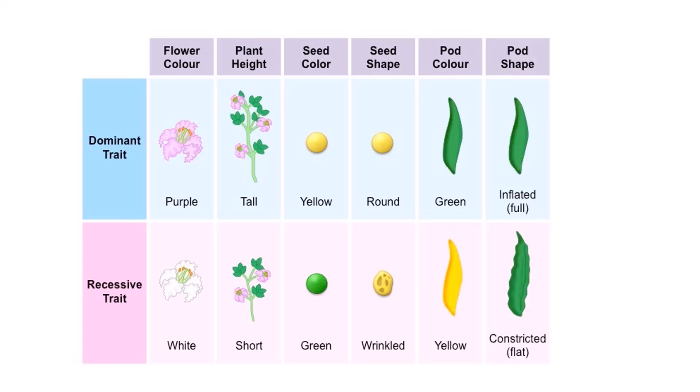The next trait is the pod shape. We have the inflated pod which is dominant to the constricted one. And yes, this is again similar to the reason we have seen for pod color. An inflated pod is going to be more attractive than a constricted one. And also, an inflated pod has more chances of rolling motion compared to a constricted pod.